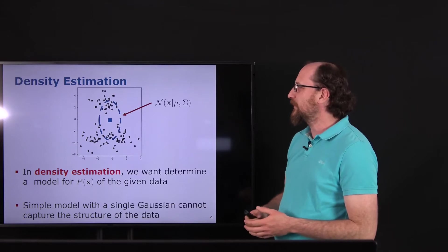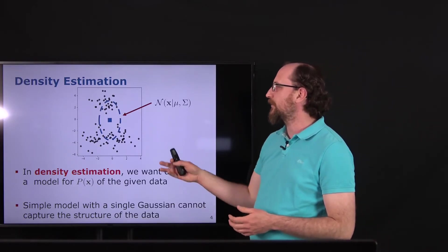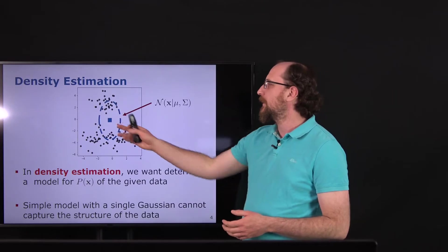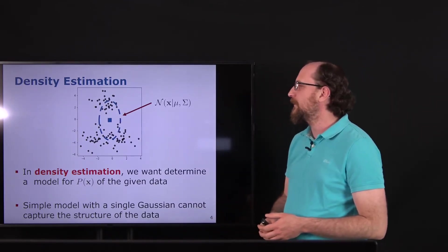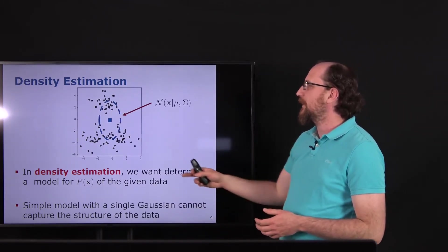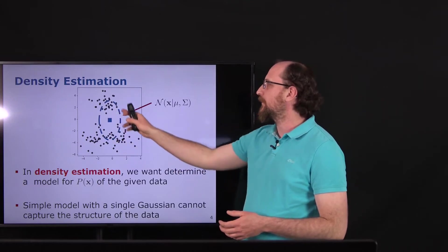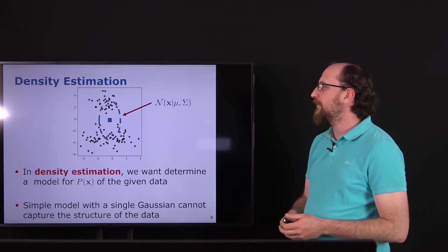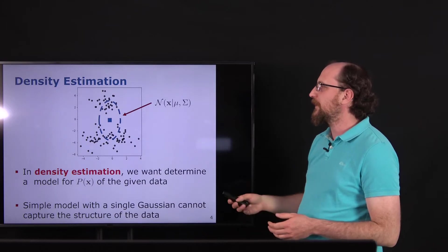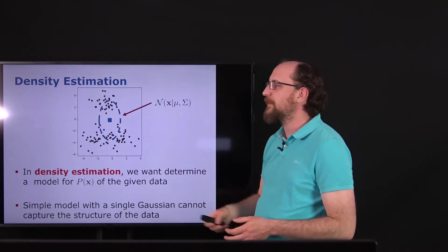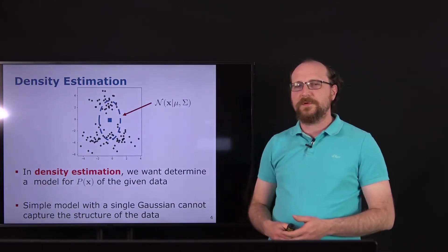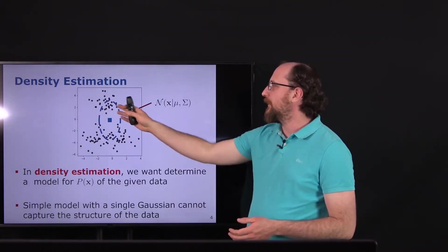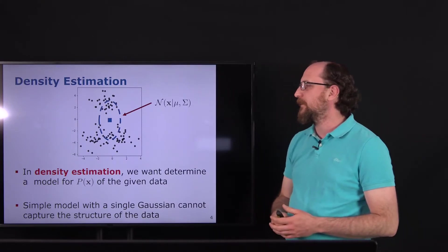When you do this, you get a normal distribution shown with the mean as a point and one standard deviation covariance as an ellipse. In this case we can see this is maybe not a good model because we cannot model multiple regions of the data very well.